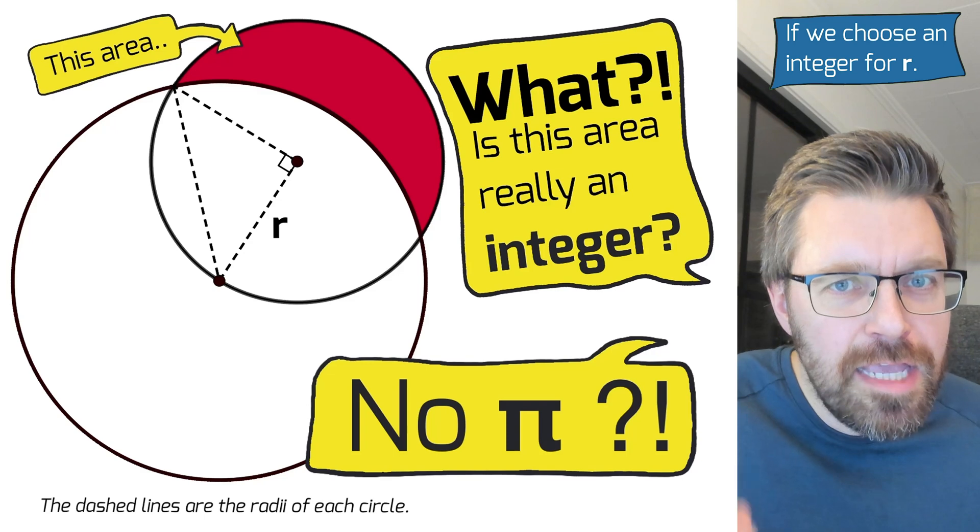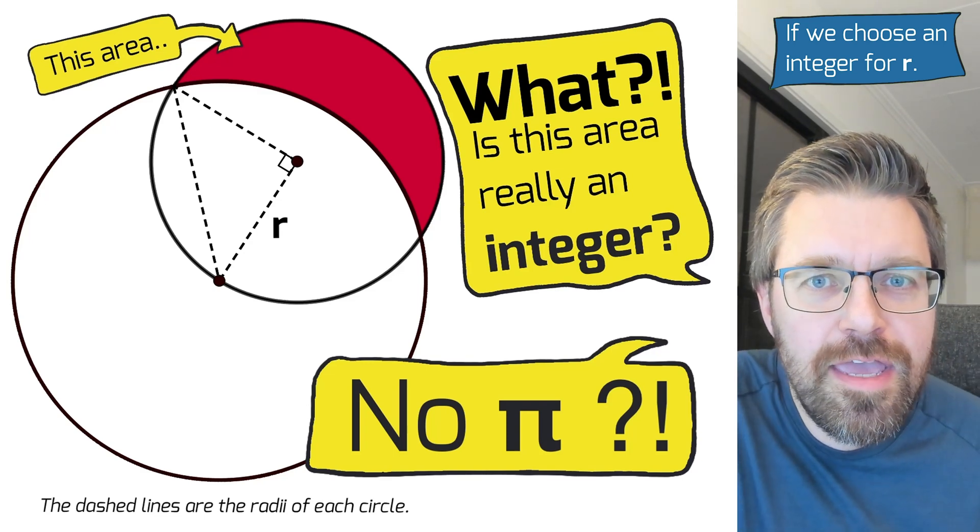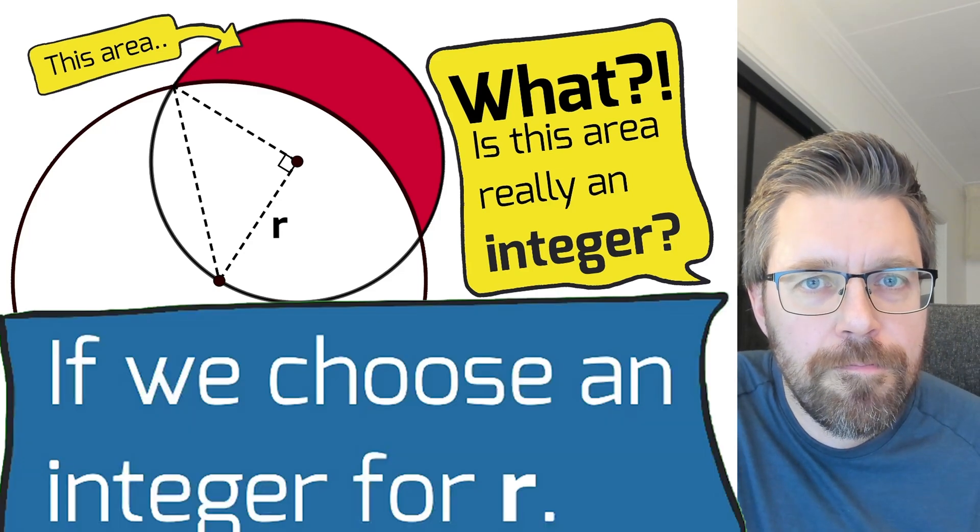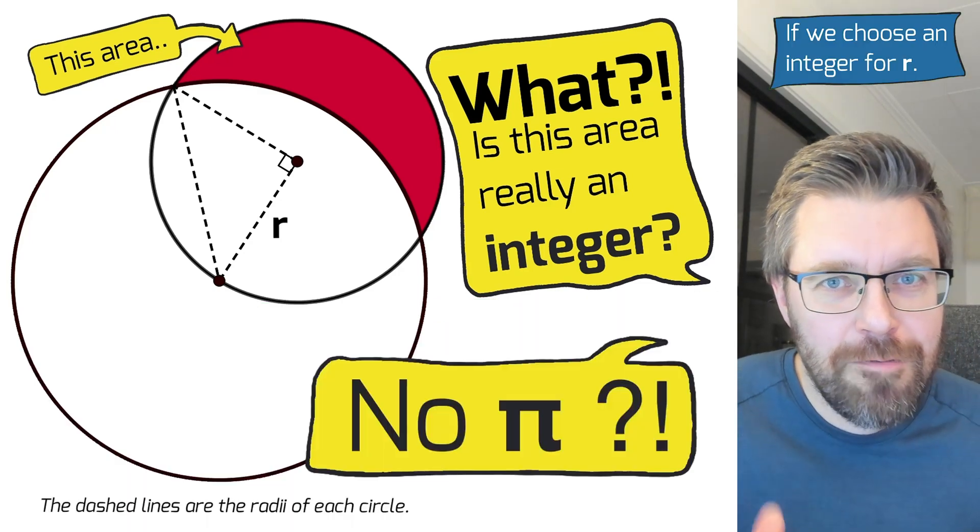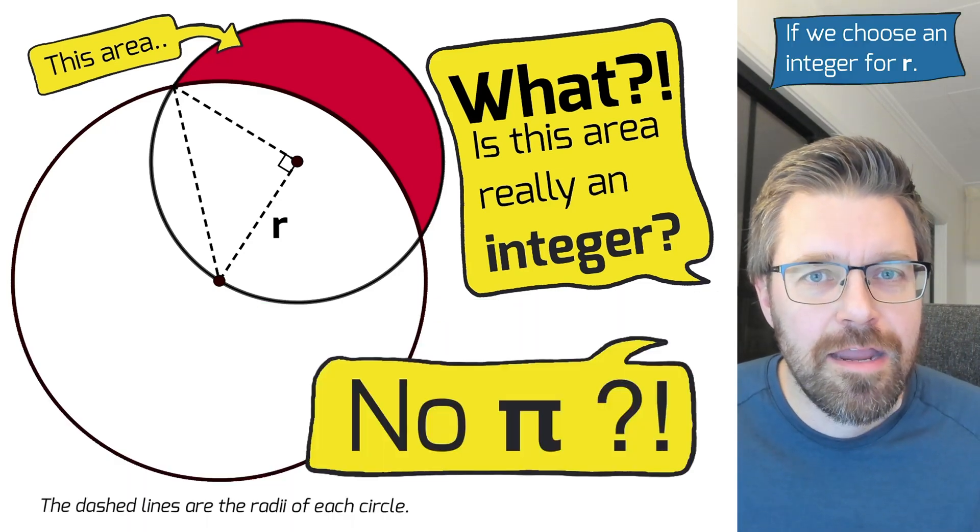And that was that this red area in this picture is an integer. Yes, it is true. Almost every area when it comes to circles have pi in it.